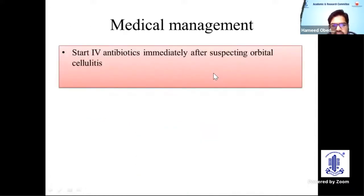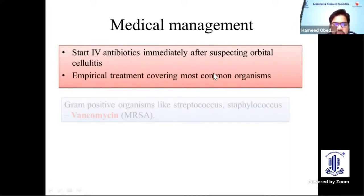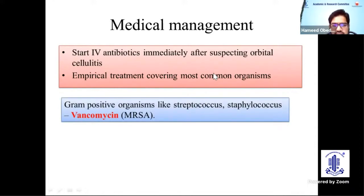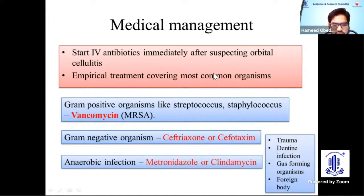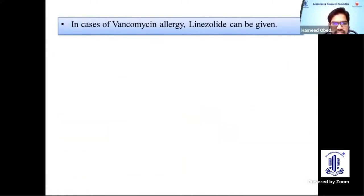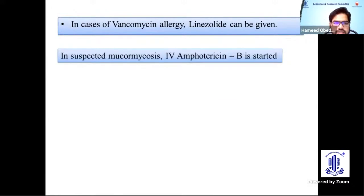Medically, as soon as you suspect orbital cellulitis, start IV antibiotics immediately. Empirical treatment should cover the most common organisms: gram-positive organisms like Streptococcus and Staphylococcus — give vancomycin, which also covers MRSA. For gram-negative organisms, start third-generation cephalosporins like ceftriaxone, which also have higher CNS penetration. For anaerobic infection, give metronidazole or clindamycin, especially in cases of trauma, dental infection, gas-forming organisms, or foreign bodies. In vancomycin allergy, give linezolid. In suspected mucormycosis, start IV amphotericin B.